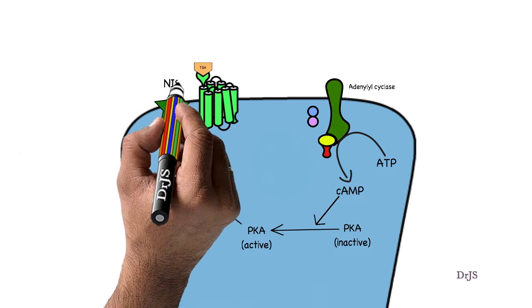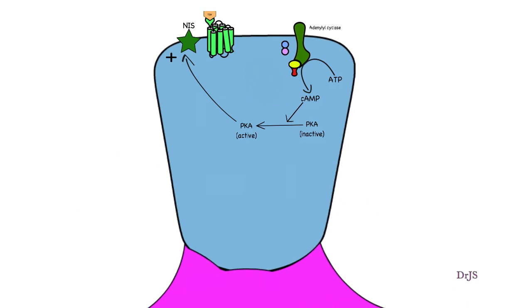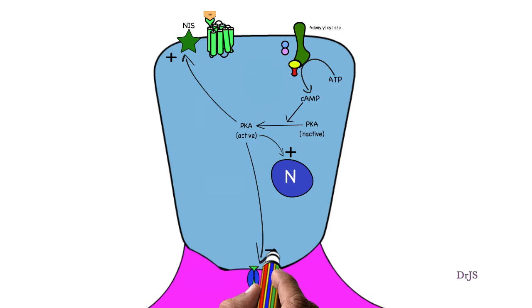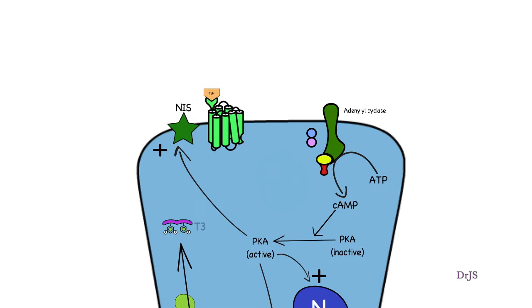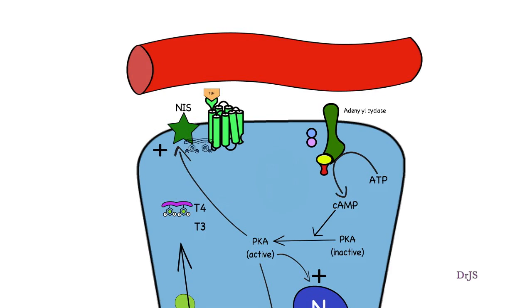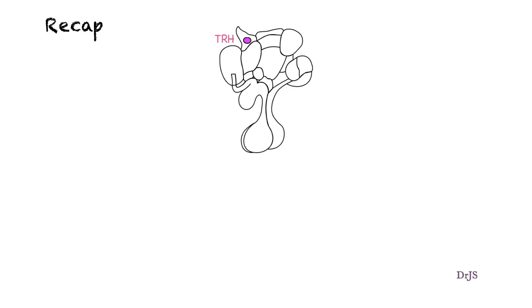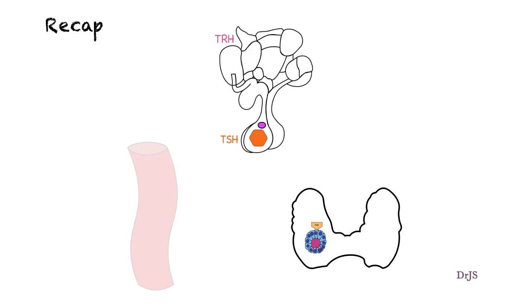This activated protein kinase A activates the synthetic and secretory machinery of the cell. The activity of the sodium-iodide symporter is increased, the synthesis of thyroglobulin is increased, and the activity of thyroid peroxidase is increased at the luminal side. Endocytosis is increased and finally T3 and T4 are secreted into the blood. In summary, TRH is released from the paraventricular nucleus of the hypothalamus, travels to the thyrotrophs in the anterior pituitary where TSH is secreted, and TSH then causes secretion of T3 and T4 into the blood.